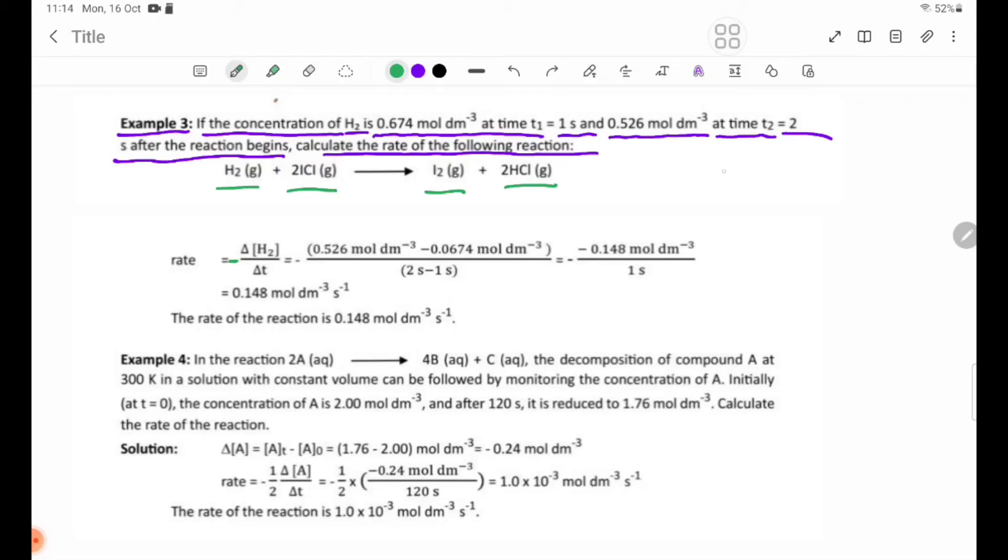Δ[H2] = 0.526 - 0.674 mol/dm³. Δt = 2 - 1 = 1 second. Rate = -(-0.148 mol/dm³) ÷ 1 s = 0.148 mol/dm³/s.